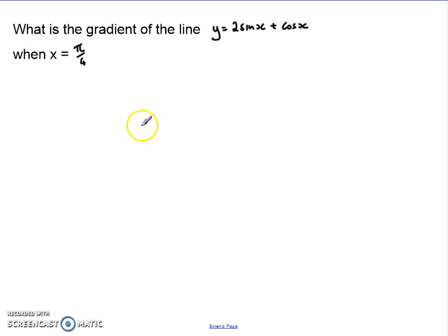So gradient, speed, rate of change, things like that all refer to the derivative. So if we see what is the gradient of the line at a point, we have to take the derivative of the equation of the line, and then substitute in the point we want. So I'm going to take the derivative of this, and then substitute in pi over 4.